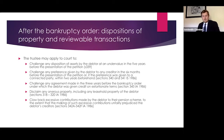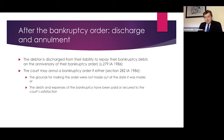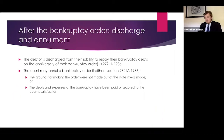Regarding discharge and annulment: first, the debtor is discharged from bankruptcy automatically after one year from the bankruptcy order. Second, the debtor can apply to annul the order if there were no grounds for ordering the bankruptcy, or if the debts and expenses of the bankruptcy have been paid or secured to the court's satisfaction. That concludes a brief introduction to the bankruptcy procedure. I'll now hand over to Stephen, who will discuss corporate insolvency.